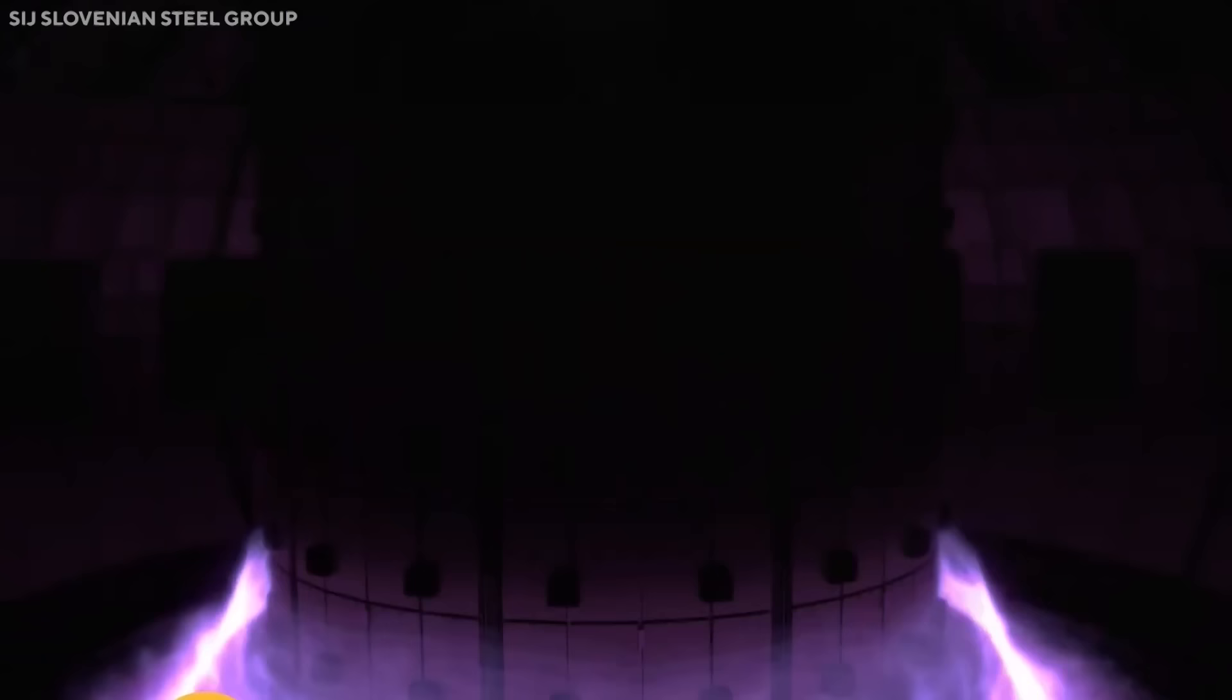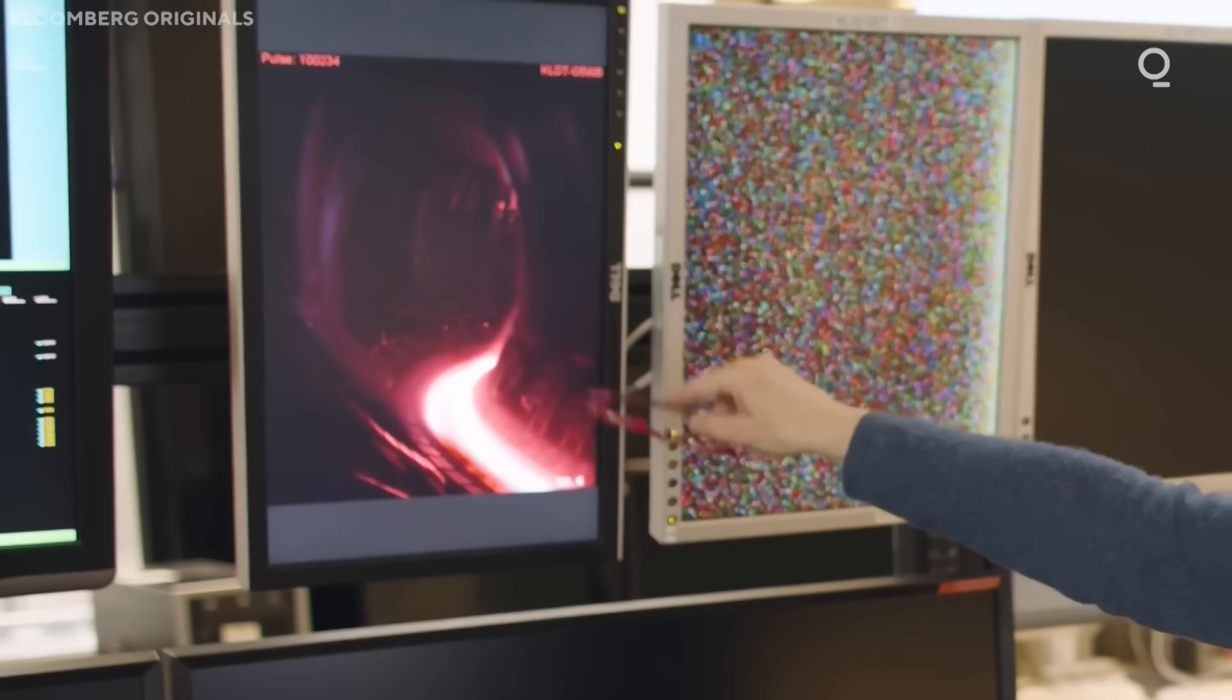Moreover, the fusion plasma, a hot and ionized gas, must be confined and stabilized for long enough to sustain the reaction. But there are two main approaches to achieve these conditions, magnetic confinement and inertial confinement.